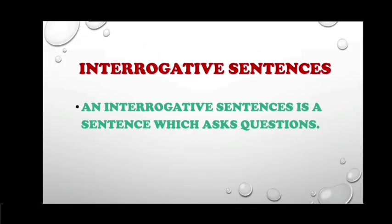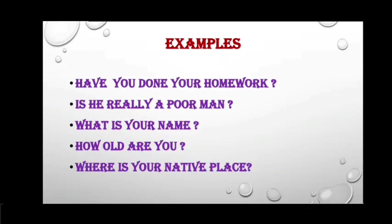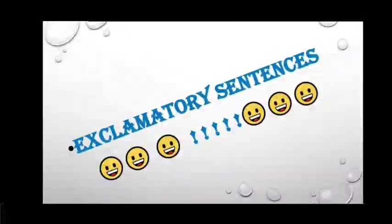Next, interrogative sentence. An interrogative sentence is a sentence which asks questions. The word order is: verb plus subject plus object, and it ends with a question mark. There are two types of questions: A is yes/no questions, and B is wh-questions. Examples: have you done your homework? Is he really a poor man? What is your name? How old are you? Where is your native place?